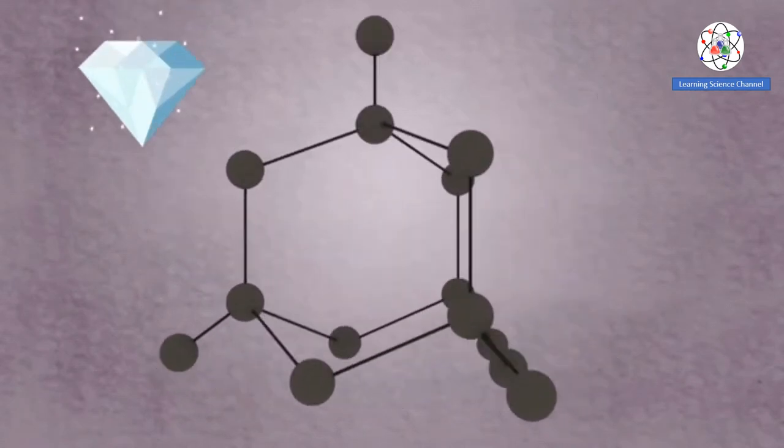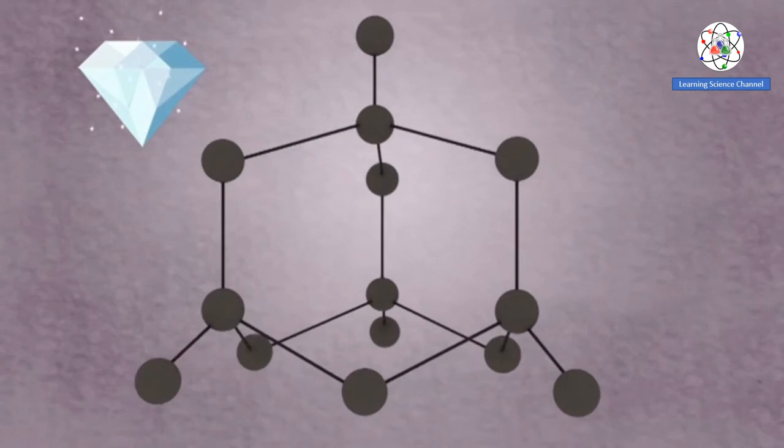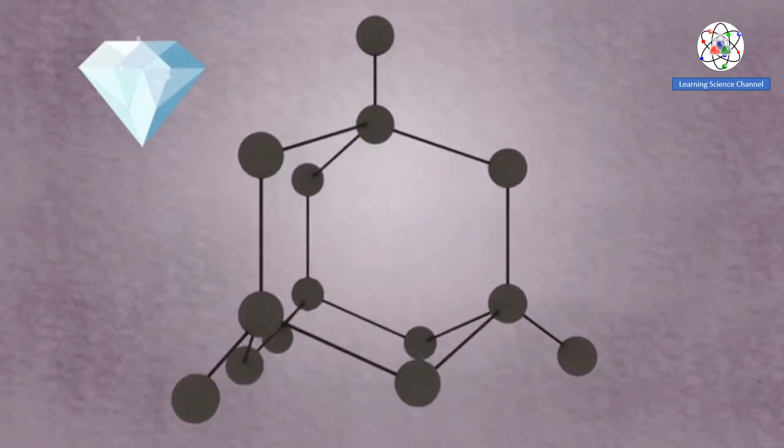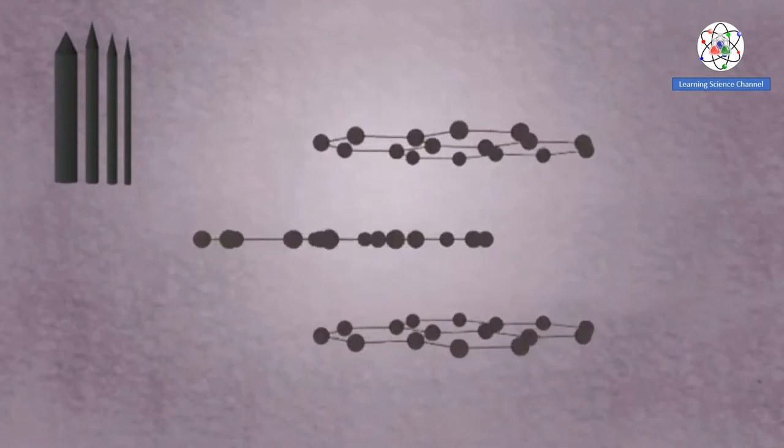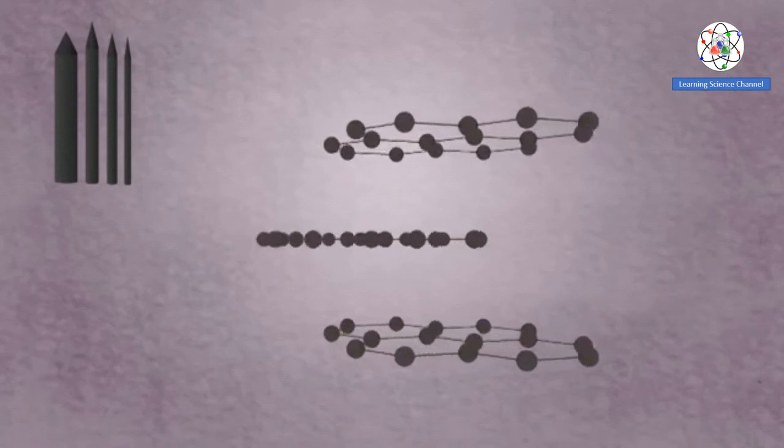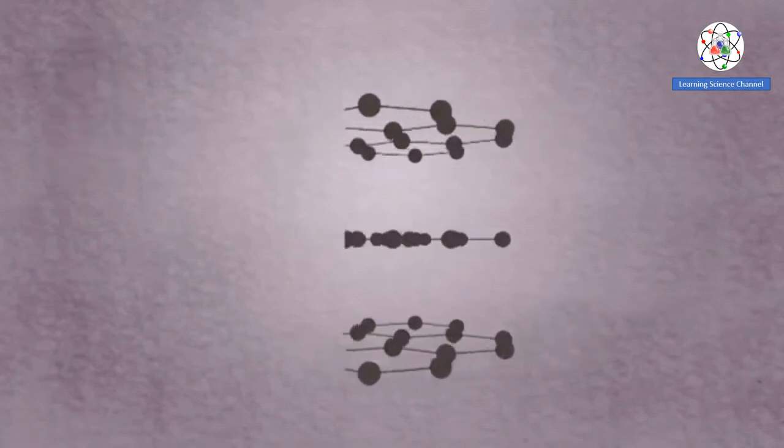Each carbon atom in diamond is covalently bound to four other carbon atoms in a tetrahedral structure. Each carbon in graphite is covalently bound to three other carbon atoms in a trigonal planar structure forming hexagonal sheets.